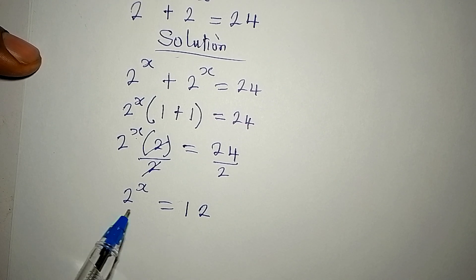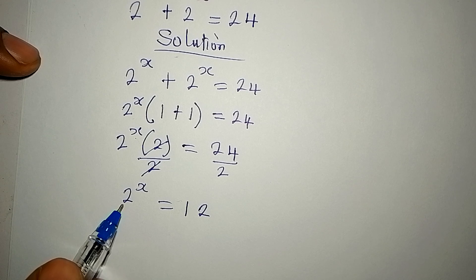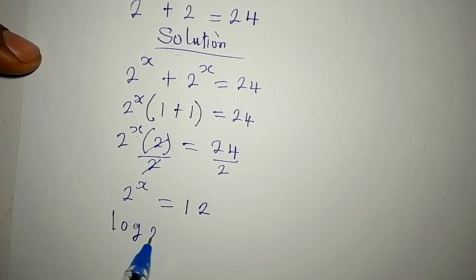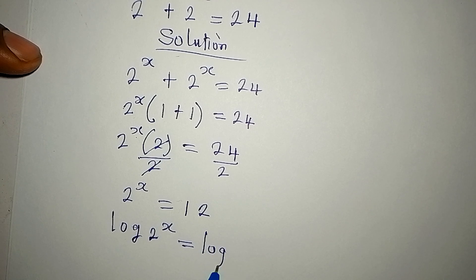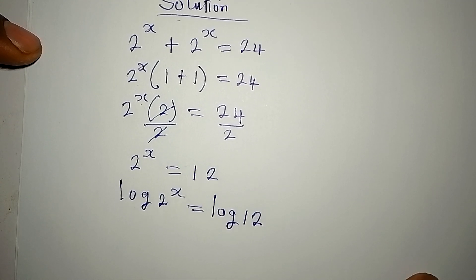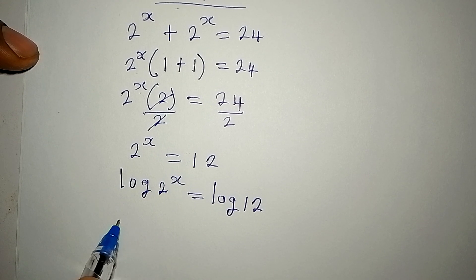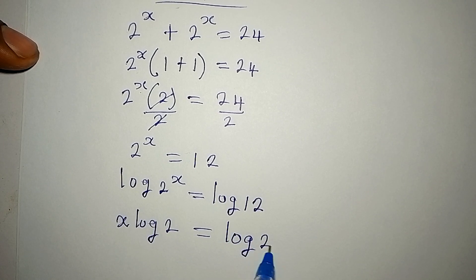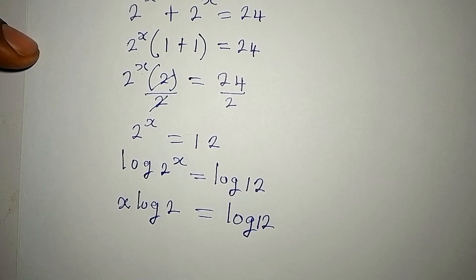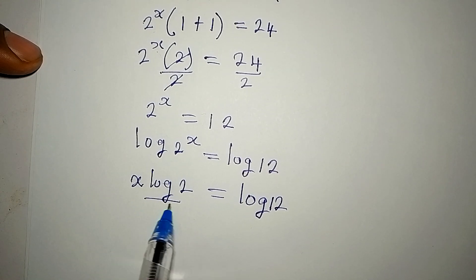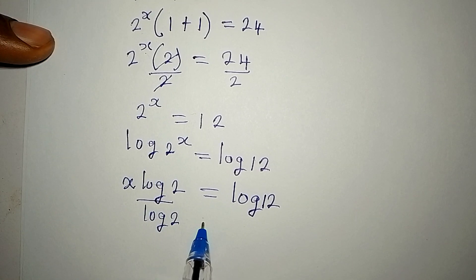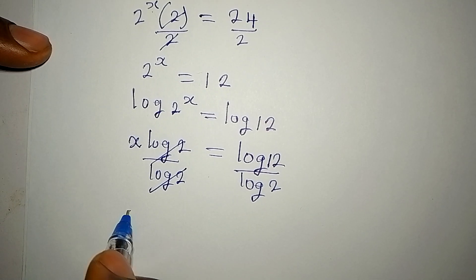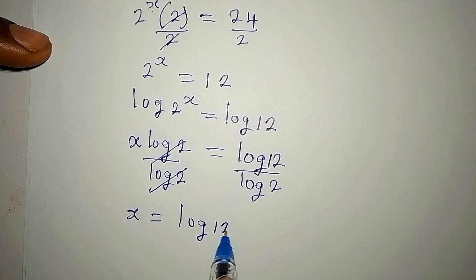It is not possible to express 12 with base 2, therefore we take the log of both sides: log of 2 to the power of x equals log 12. The power can come down in front, so we have x times log 2 equals log 12. We divide both sides by log 2 so that x is equal to log 12 over log 2.